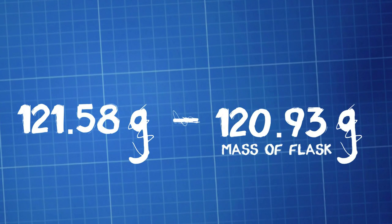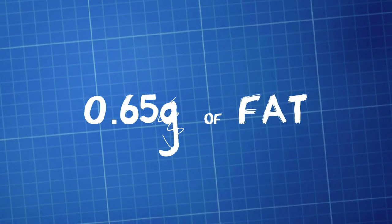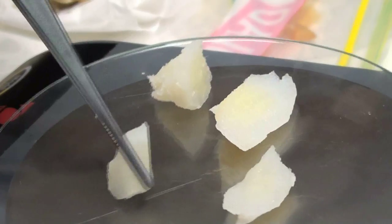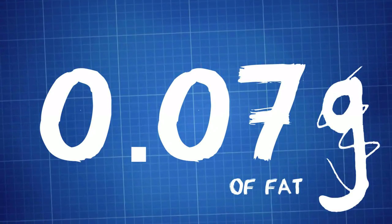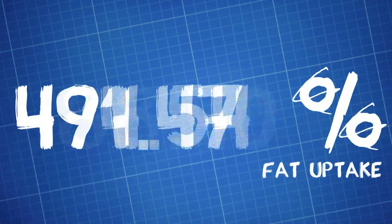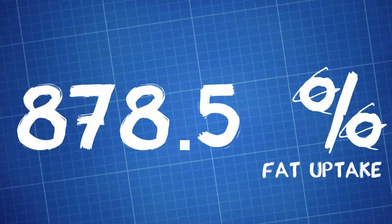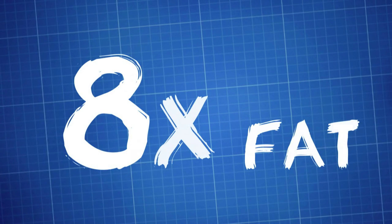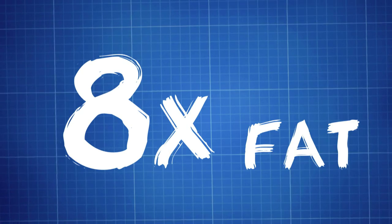Now we measure the mass of the flask with the potato and the reading is 121.58 grams. By subtracting this mass from the mass of the flask, we can clearly see that the fried potato has 0.65 grams of fat. The whole experiment is repeated again, but this time with boiled potato. The result is 0.07 grams of fat. With some simple calculation, we can clearly see that the fat uptake percentage during deep frying is an astonishing 878.5%. That is, the potato has actually uptaken 8 times the amount of fat when compared to its original fat content.